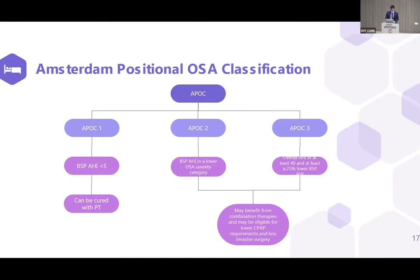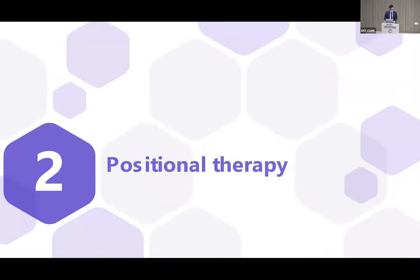In this classification, patients are divided into three groups: APOC 1, 2, and 3. In APOC 1, the patient's best sleeping position AHI is within the normal range, so these patients can potentially be cured with a positional therapy device. In APOC 2, the best sleeping position AHI falls in a lower OSA severity category. In APOC 3, the overall AHI is at least 40 with at least 25% lower best sleeping position AHI. APOC 2 and 3 patients may benefit from combination therapy and potentially require lower CPAP pressure or avoid invasive surgery.